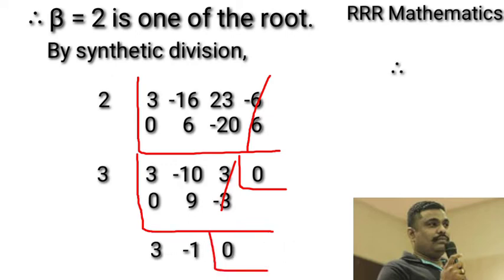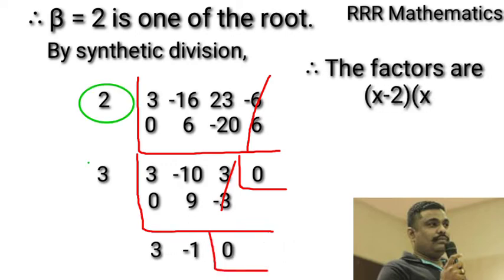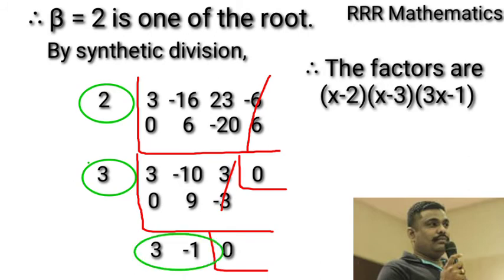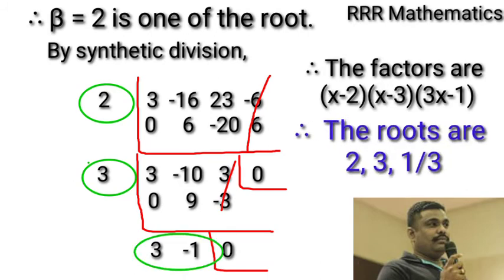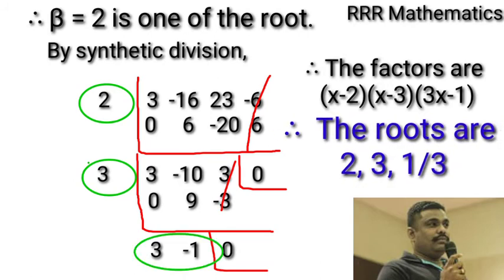So in this case, the factors are (x-2)(x-3)(3x-1). Therefore, the roots are 2, 3, and 1/3.